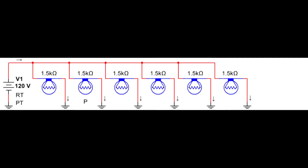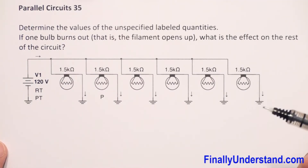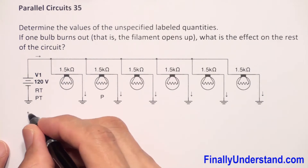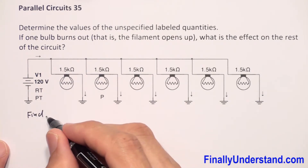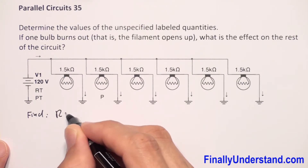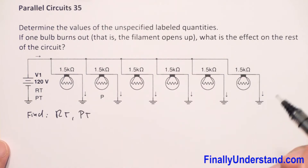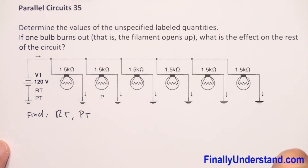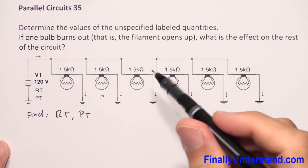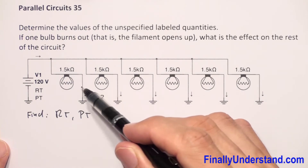Let's take a look at this example. This time we have six bulbs. We are going to write down what we're supposed to find: R total and P total. Let's assume that the circuit is functioning correctly, so all those bulbs are exactly the same — they have the same resistance.